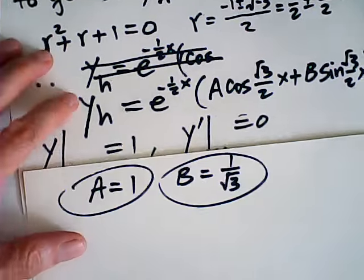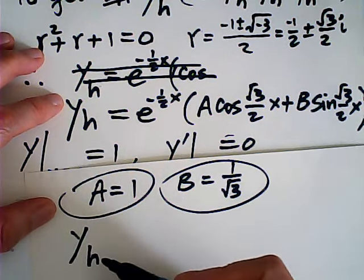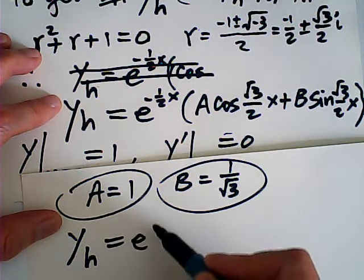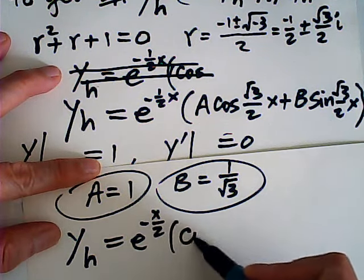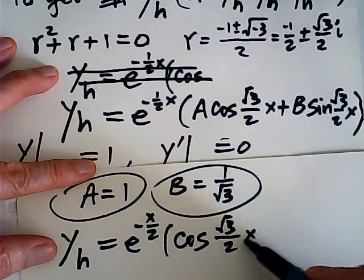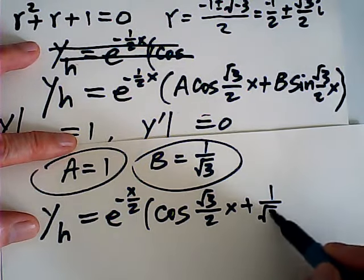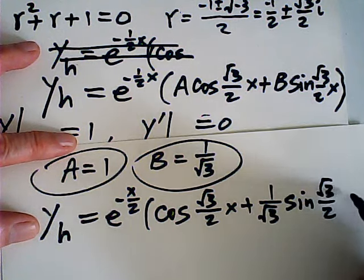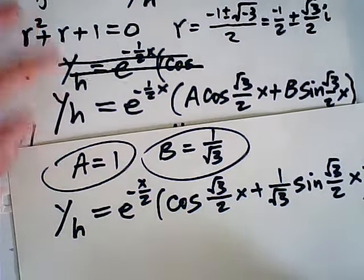I suppose you know how to verify those. Therefore, my homogeneous solution is y_h equals e to the negative one-half x times the quantity cosine of (root 3 over 2)x plus (1 over root 3) sine of (root 3 over 2)x. That is my homogeneous solution.